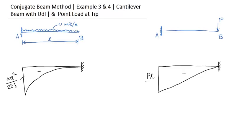You see the cantilever beam, the deflected shape is like this, so the slope is zero here and there is a slope here. This is the slope theta B you have to calculate.